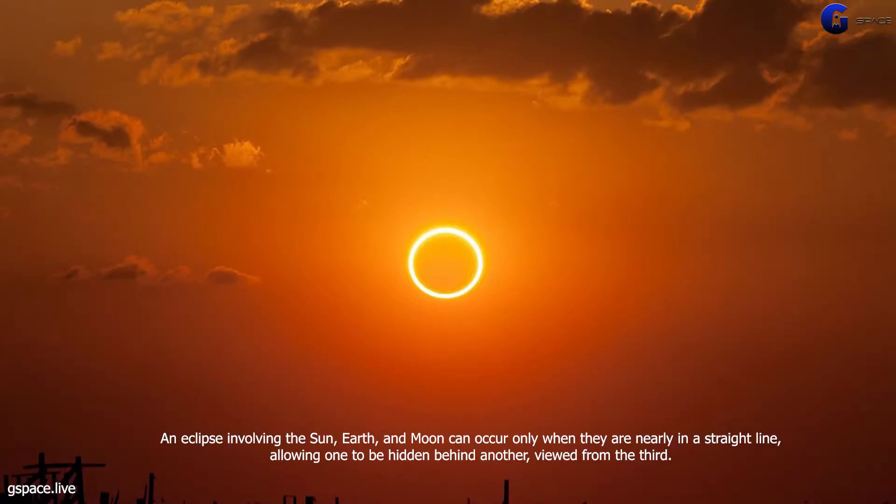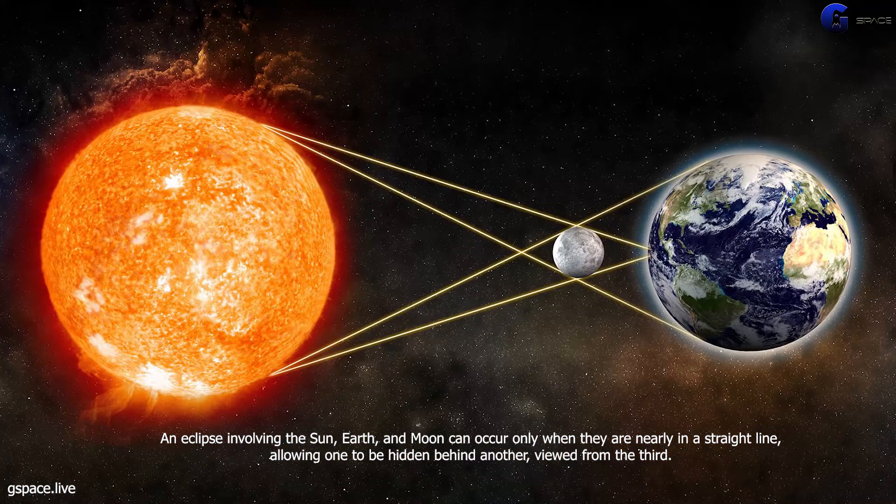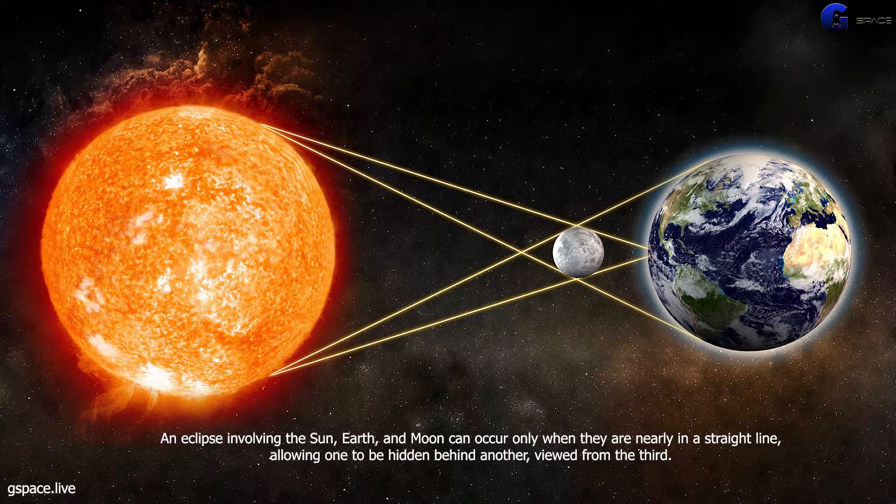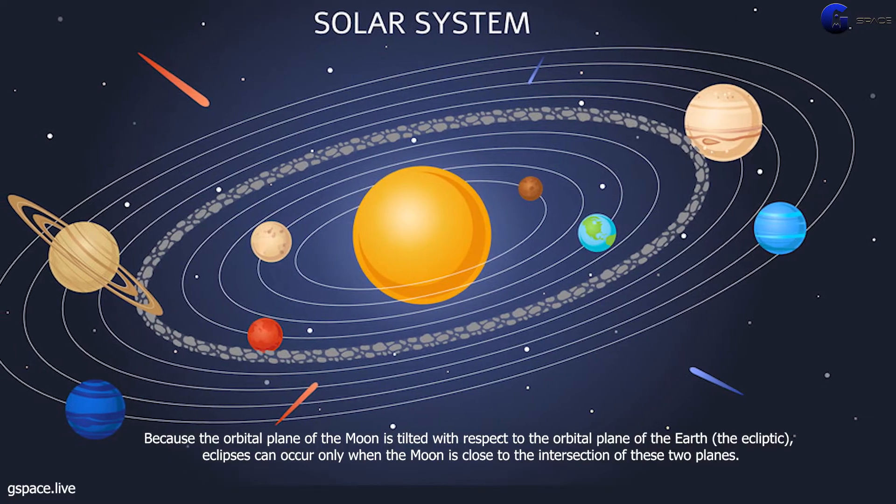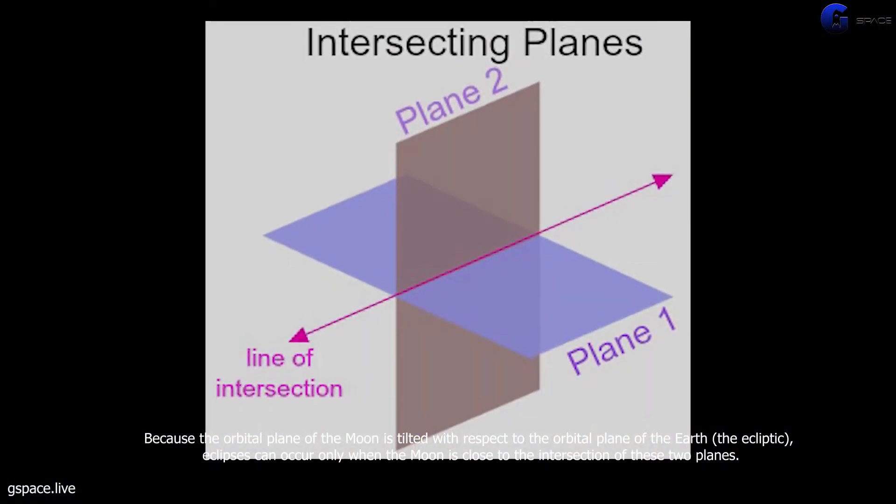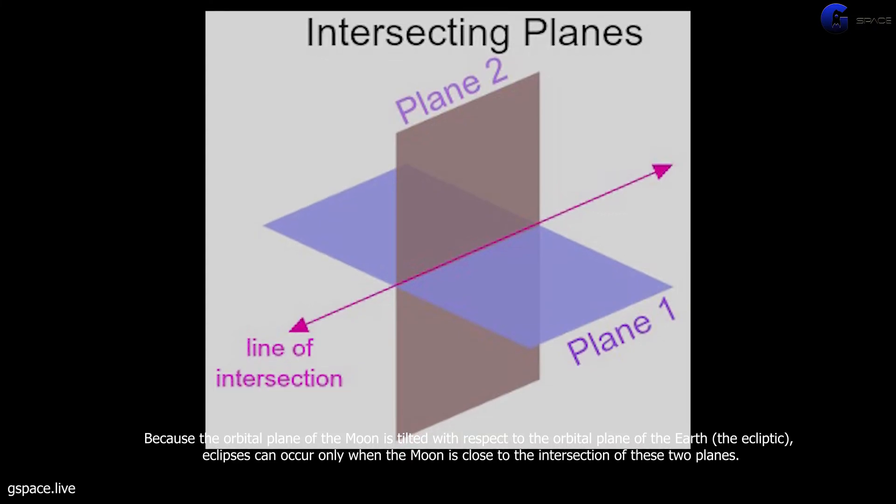Earth-Moon system. An eclipse involving the sun, earth, and moon can occur only when they are nearly in a straight line, allowing one to be hidden behind another, viewed from the third. Because the orbital plane of the moon is tilted with respect to the orbital plane of the earth, the ecliptic, eclipses can occur only when the moon is close to the intersection of these two planes.